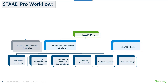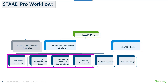These are the two modes for creating a model. Now, in both modes, creating the structure geometry, assigning the section properties and different specifications, application of the loads and creating load combinations, and further giving the analysis commands — these four steps are common in both modes. Whereas the perform analysis step gets performed only in the analytical modular mode.